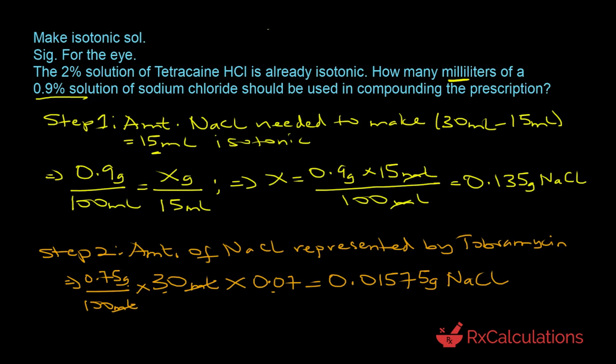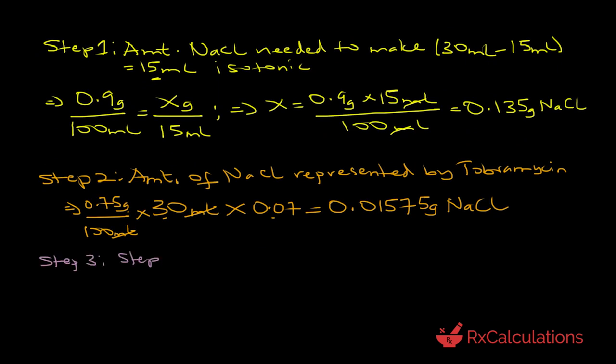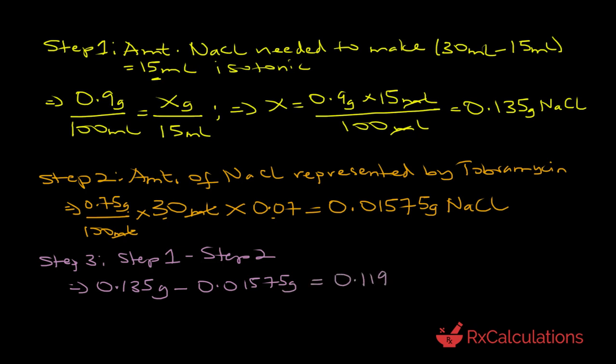Now that we have step 1 and step 2, in step 3 we take step one minus step two: 0.135 grams minus 0.01575 grams equals 0.11925 grams sodium chloride. If we were using solid sodium chloride, we would weigh out 0.11925 grams (or 119.25 mg). But the question states we should use a 0.9% solution of sodium chloride.